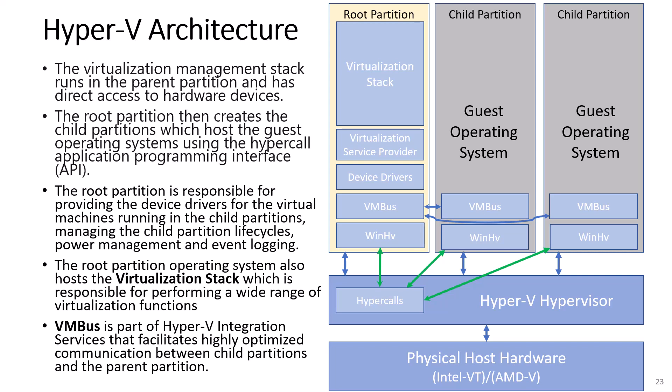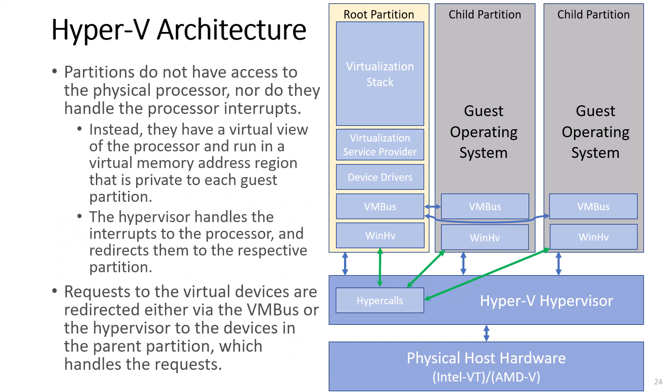The root partition operating system also hosts the virtualization stack which is responsible for performing a wide range of virtualization functions. VMBus is part of the Hyper-V integration services that facilitates higher optimized communications between child partitions and the parent partition. Partitions do not have access to the physical processor nor do they handle processor interrupts. Instead, they have a virtual view of the processor and run in a virtual memory address region that is private to each guest partition. The Hypervisor handles the interrupts to the processor and redirects them to the respective partition. Requests to the virtual devices are redirected either via the VMBus or the Hypervisor to the devices in the parent partition, which handles the requests.